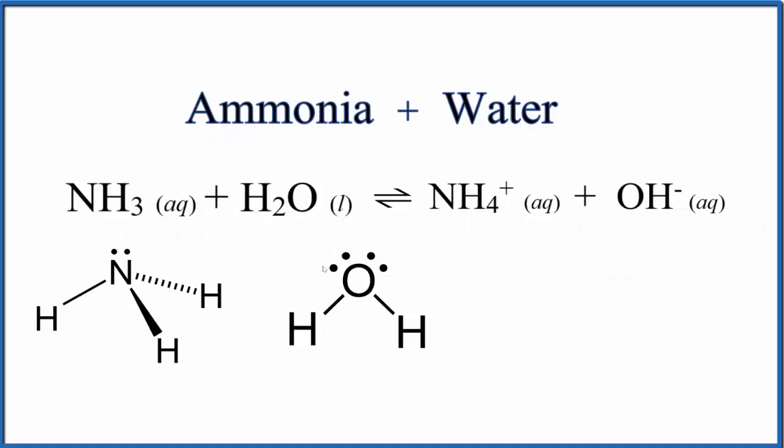Let's wrap up by talking about what's happening chemically. We have the Lewis structure for ammonia: a lone pair and three hydrogens. Water has two lone pairs and two hydrogens.